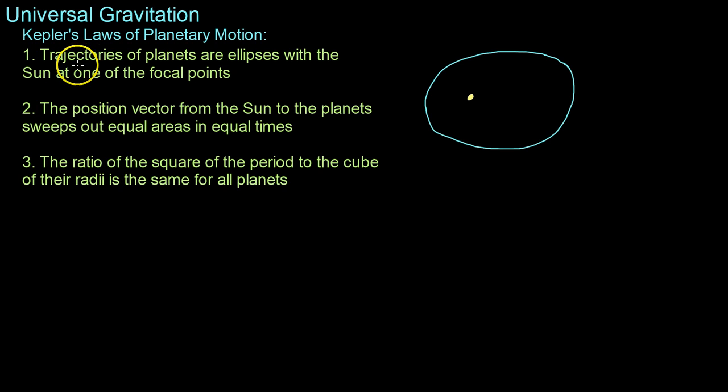them geometrically before we hop into the mathematics behind them. So the first law, or Kepler's first law, is that trajectories of planets are ellipses with the Sun at one focal point, which is simple enough to illustrate. You have the Sun here and an ellipse going around.